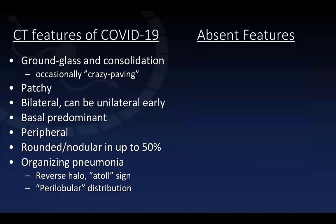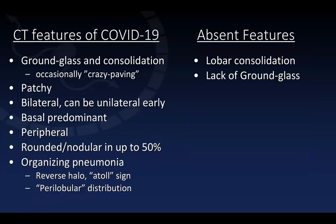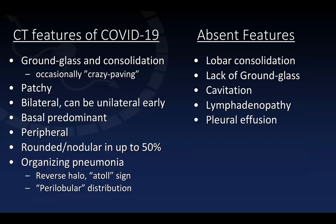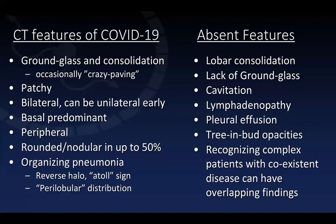It's also helpful to note the absent features seen in COVID-19 so far: a lack of lobar consolidation more indicative of bacterial pneumonia; ground-glass-only consolidation without any ground glass would be unusual; a lack of cavitation; no lymphadenopathy is typically seen; and a lack of pleural effusion. One striking thing is the lack of tree-in-bud opacities — suggesting a lack of mucus plugging or airway thickening — which is interesting since we typically associate that with airway-spread infection.